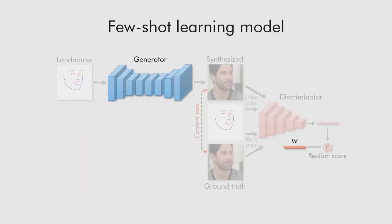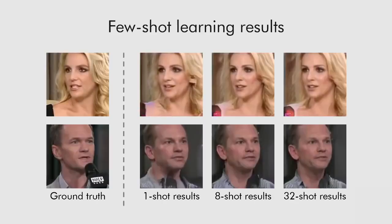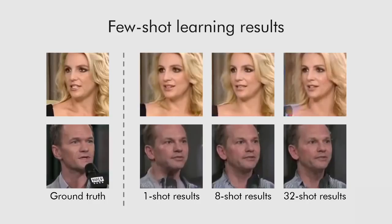After that, we train the generator and the discriminator on the available few images using the same adversarial objective as in the meta-learning stage. The adversarial fine-tuning is very important for the improvement of realism and identity matching. It also allows us to get a more personalized model given a larger image set for fine-tuning. The identity match improvement is particularly noticeable in the bottom example.